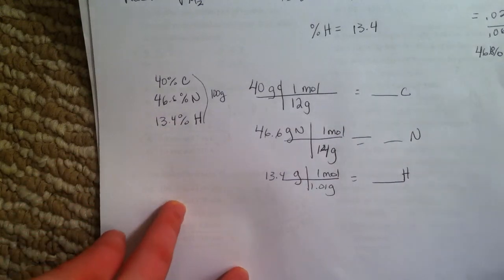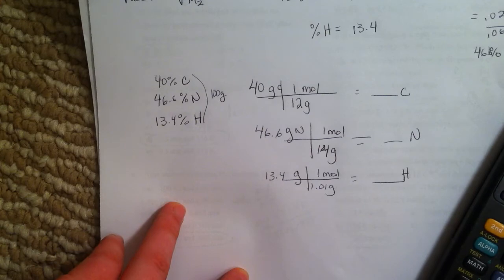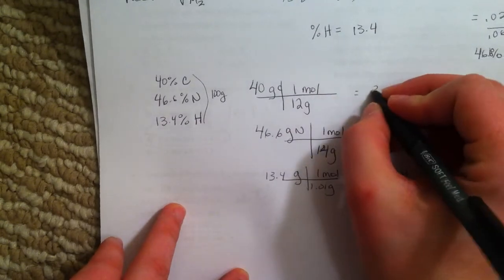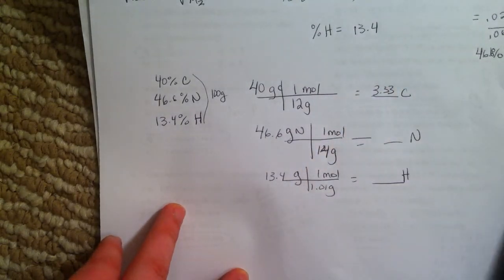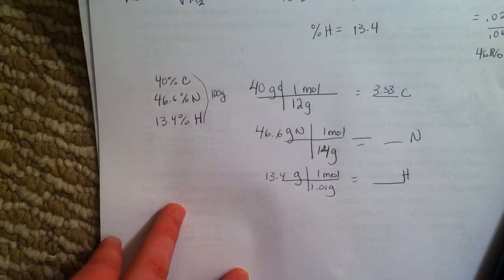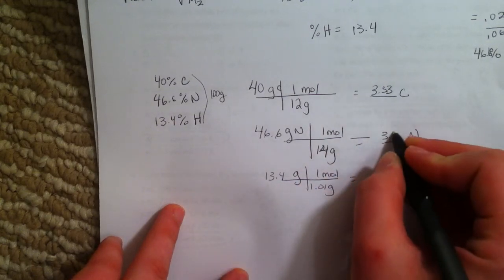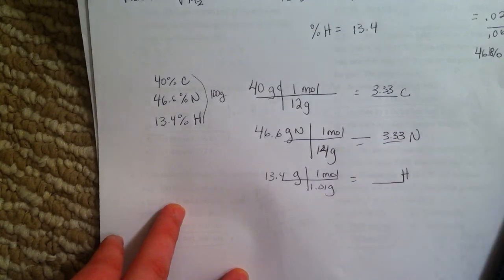Start with grams, go to moles. When you put these in your calculator, you get 3.33 for carbon, 3.35 for nitrogen, and 13.4 divided by 1.01 for hydrogen.